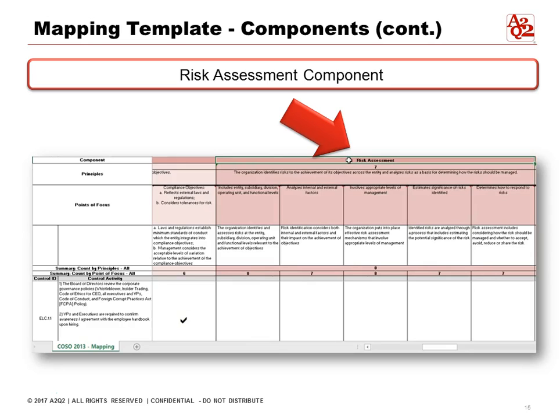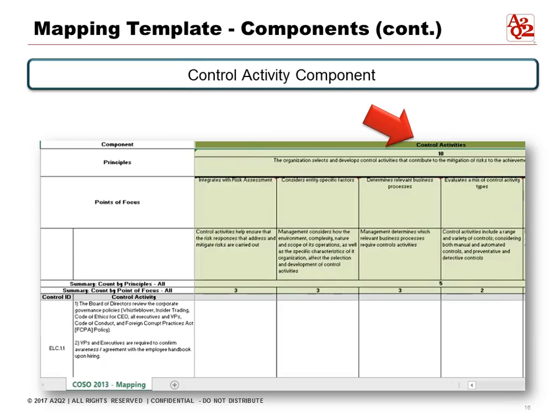One of the questions people often ask us is how do we get this information to build the template. COSO 2013 is widely available — it's free. Just search on the web for COSO 2013 framework and you'll get a copy of it. The hard work, or the time-consuming part, was creating and laying out the template so that it can be used effectively and so that auditors can rely on it and you can show your work.